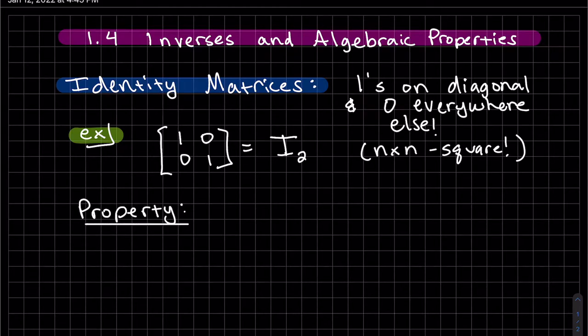Okay, so identity matrices have ones on the diagonal and zero everywhere else. This is an example of a two-by-two identity matrix, and you could put the two there if you like, but you can also drop it.